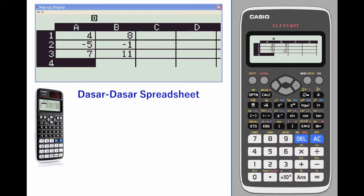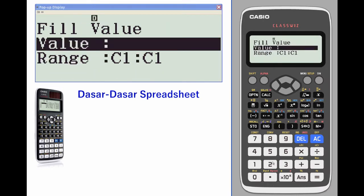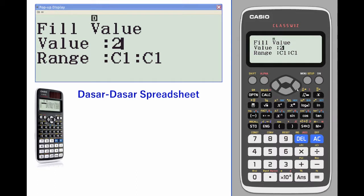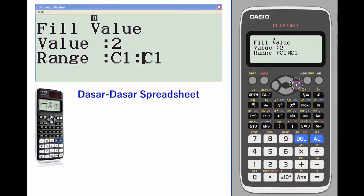Other things you can do: go back to option and fill with one value. I want to put the value of 2 in cells C1 through C4.